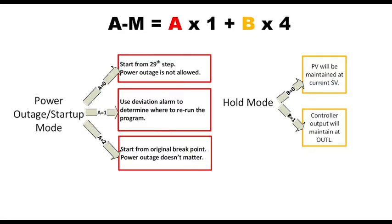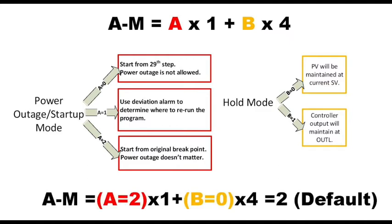There are also two options for the hold mode. When the controller program is being held, you can have the temperature maintained at the current set temperature or the OUTL, preset output low limit value. The default setting of AM is 2 for scenarios where power failure will not affect production and maintain the set temperature during program while the program is on hold.